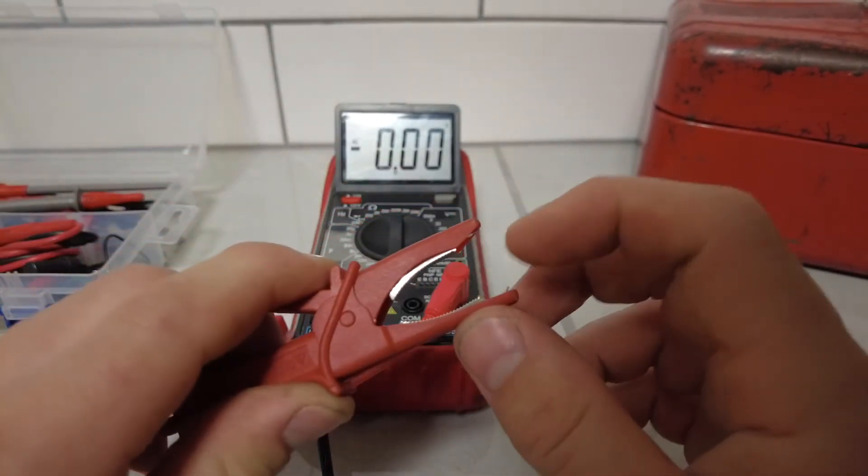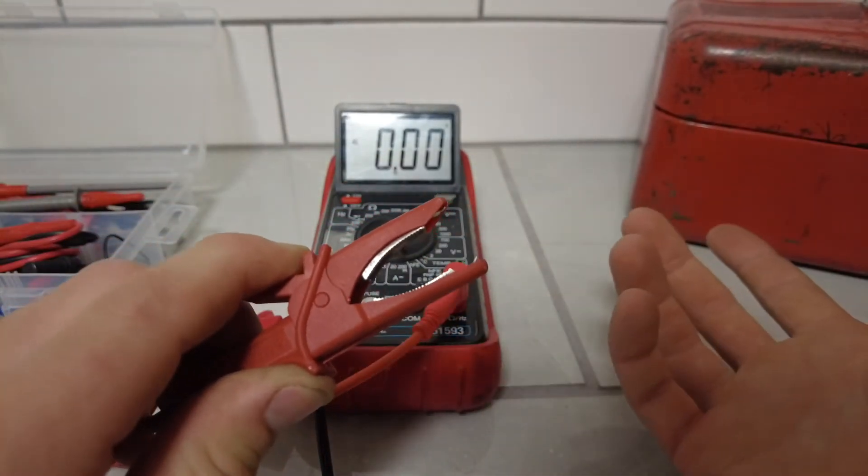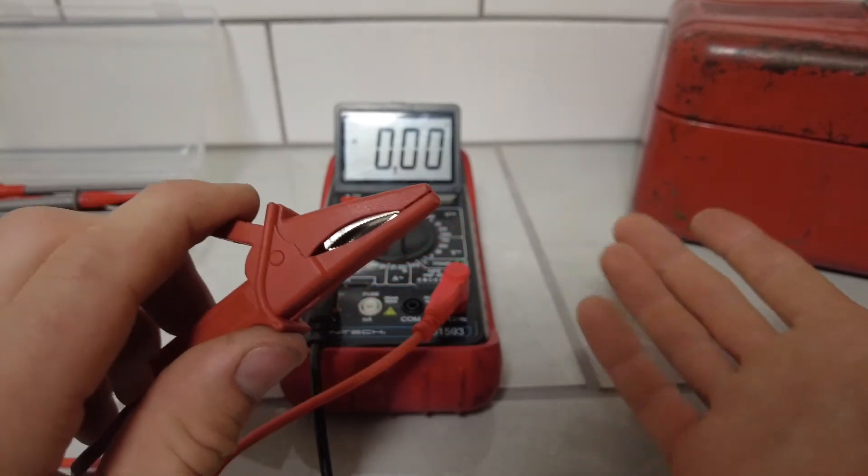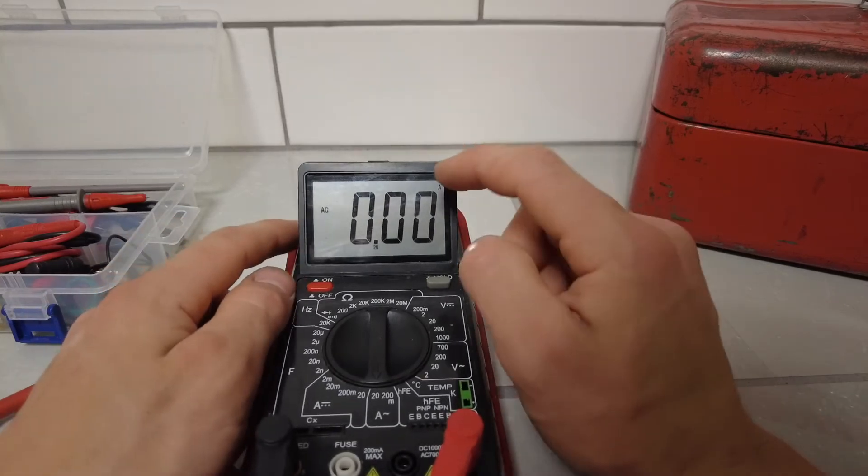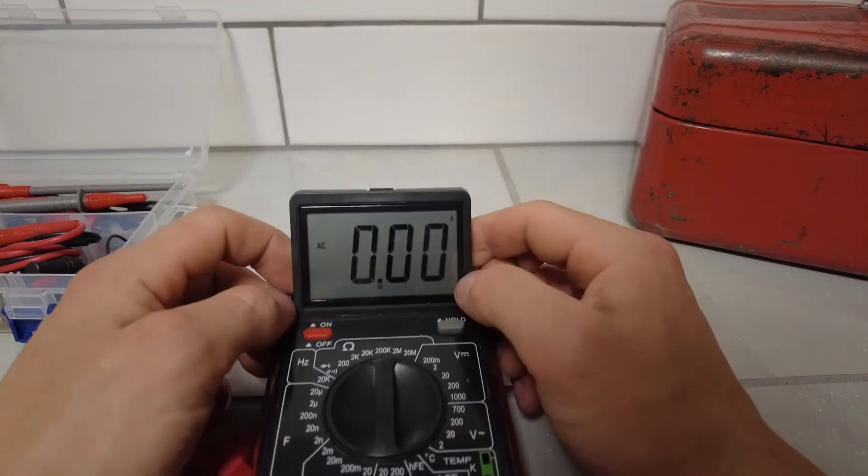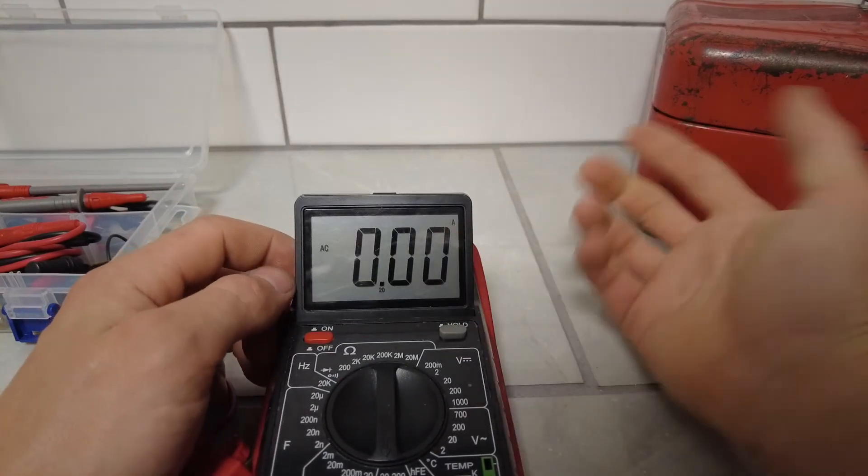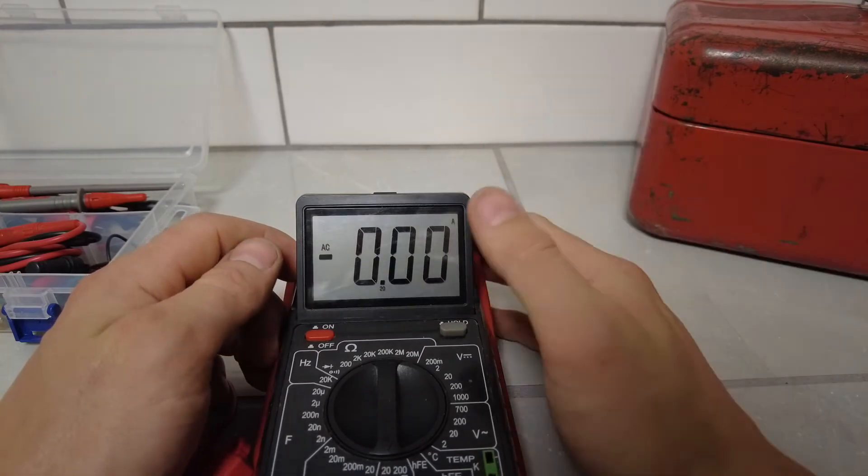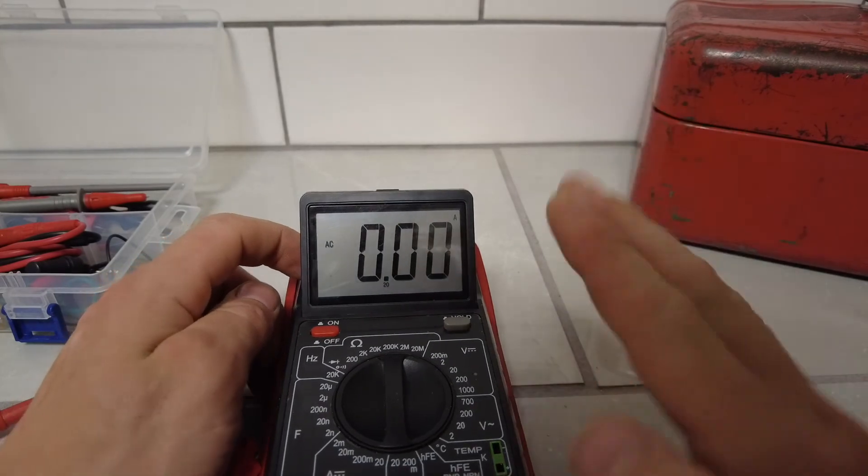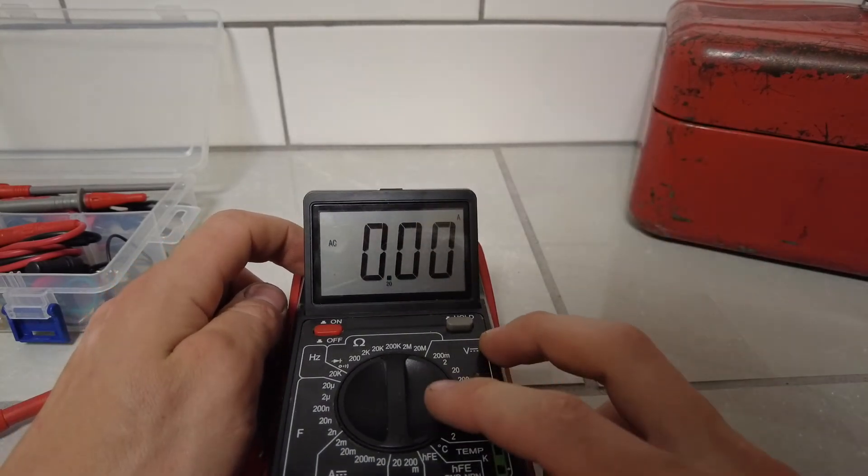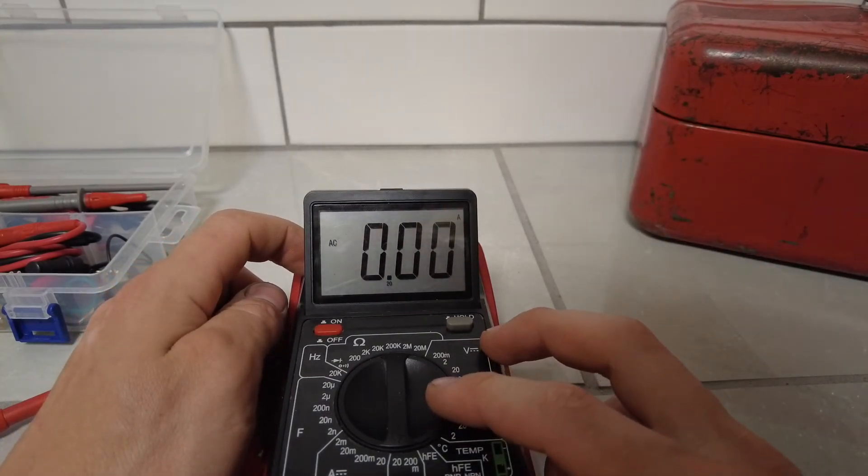You hook this up to the positive terminal on the battery and then you hook up this to the positive battery wire that's on the car. Then you can see how many amps are running through. Like, say you open the door and the interior light comes on, you can see how many amps that's pulling. That's a useful feature that I use.